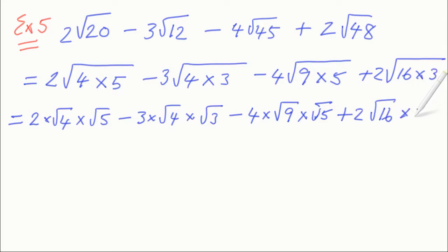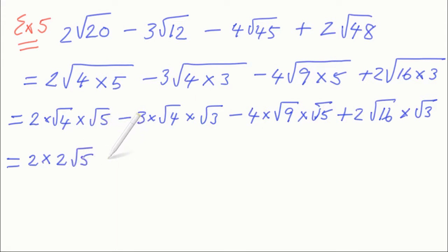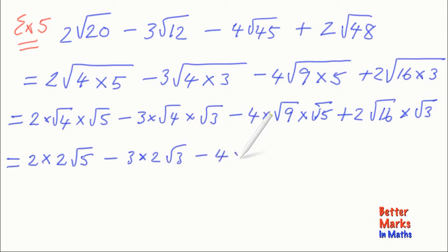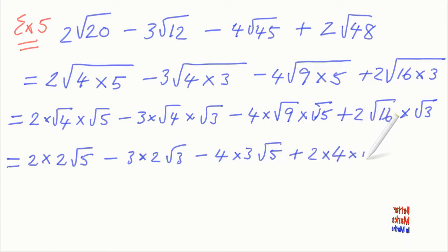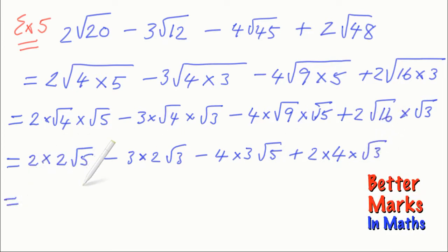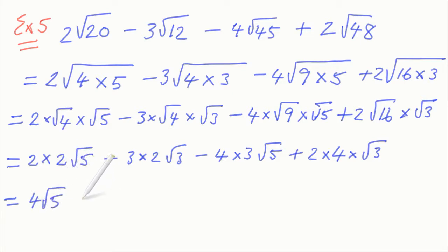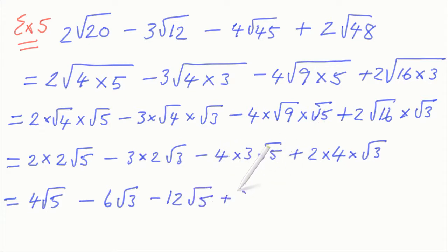Separating the surds: 2 times root 4 times root 5, minus 3 times root 4 times root 3, minus 4 times root 9 times root 5, plus 2 times root 16 times root 3. Now evaluating the perfect squares: the square root of 4 is 2, giving 2 times 2 root 5, which is 4 root 5. Then 3 times 2 is 6, giving minus 6 root 3. Then 4 times 3 is 12, giving minus 12 root 5. And finally 2 times 4 is 8, giving plus 8 root 3.